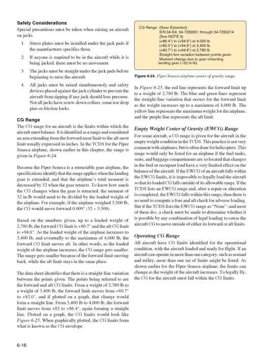Empty Weight CG Range: For some aircraft, a CG range is given for the empty weight condition in the TCDS—more common for helicopters than airplanes. If the EWCG falls within the EWCG limits listed in the TCDS, it is impossible to legally load the aircraft so that its loaded CG falls outside the allowable range, eliminating the need to compute a fore and aft adverse loading check. If the TCDS lists the EWCG range as 'none'—as most do—a check must be made to determine whether any combination of legal loading could cause the aircraft CG to move outside its forward or aft limits.